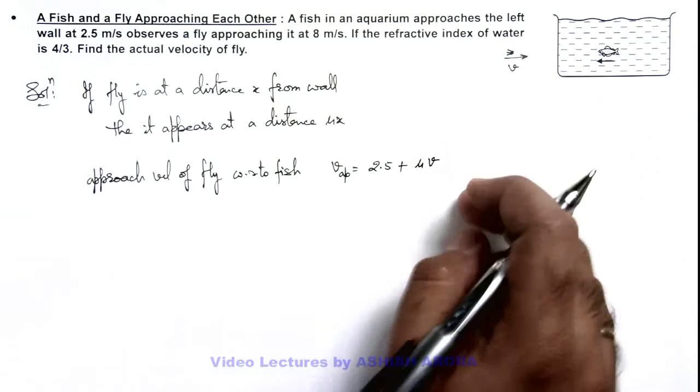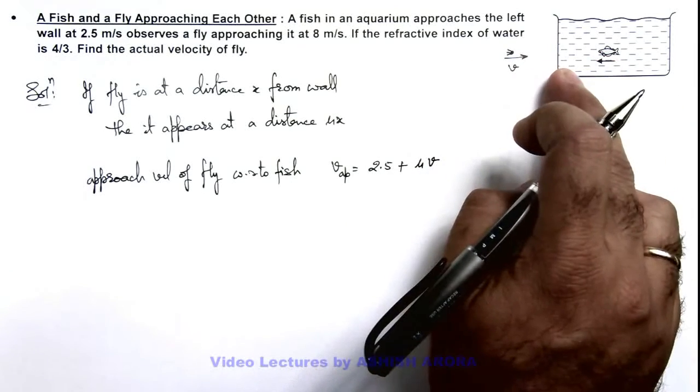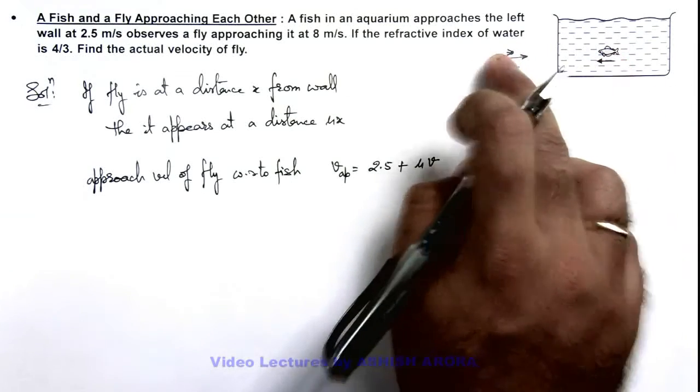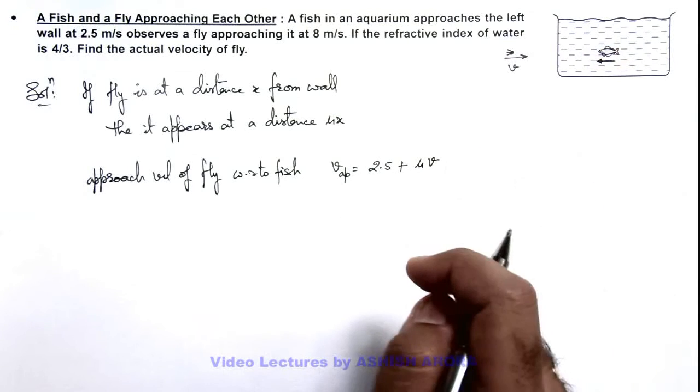If v is the actual velocity of fly, to fish it appears to be mu v. So the relative speed of fly with respect to fish will be mu v plus 2.5.